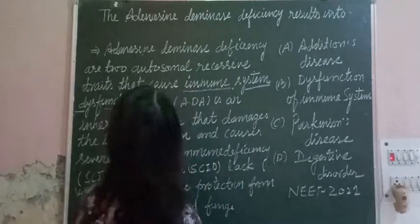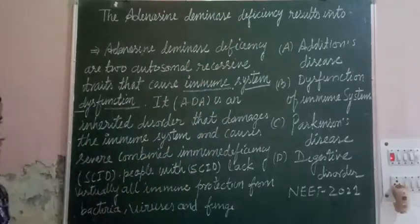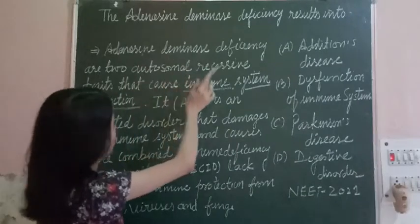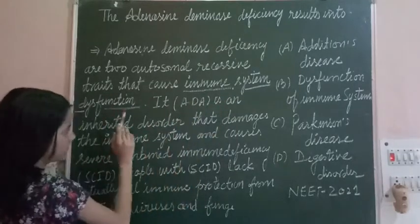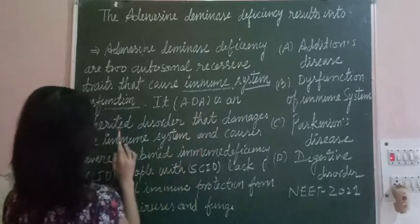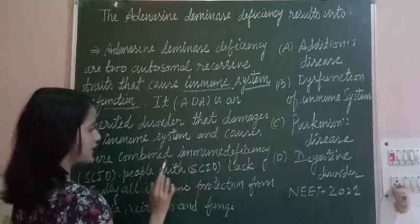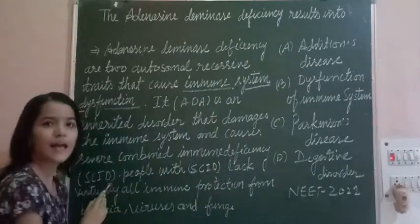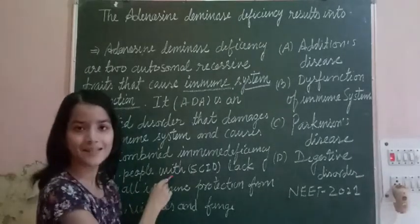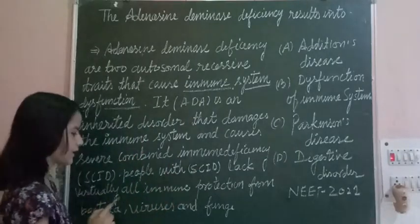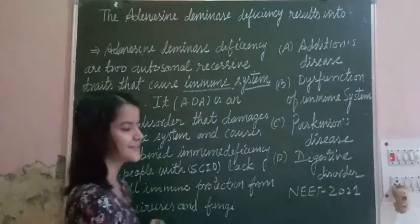Our question is: the adenosine deaminase deficiency results in what? First, let us understand this. Adenosine deaminase deficiency is an autosomal recessive trait that causes immune system dysfunction. It is an inherited disorder that damages the immune system and causes Severe Combined Immunodeficiency, SCID. People with SCID lack virtually all immune protection from bacteria, viruses, and fungi.